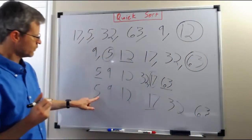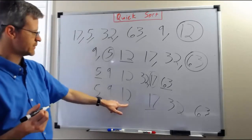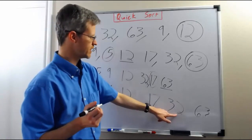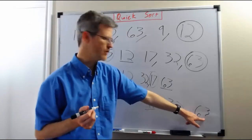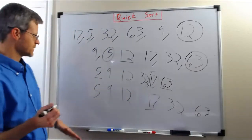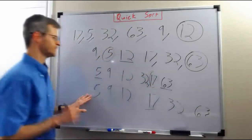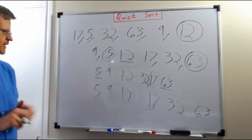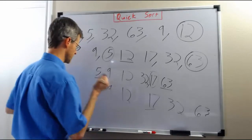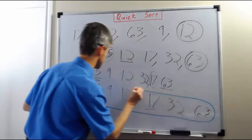We have a list of length 1 that we know is in the right place, and each of the remaining lists of length 1 is also in the right place. Since each of the lists of length 1 is sorted with respect to itself, we know that this result here is completely sorted, and I'm going to circle it just to show that it's the result.